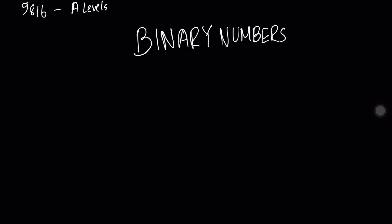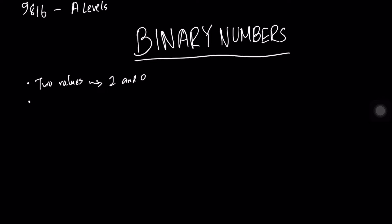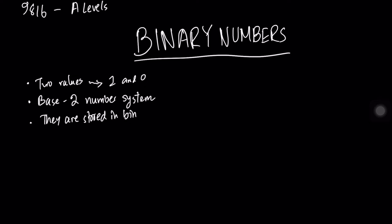So what is the binary number system and how does it work? Binary number systems work using two values. They represent data with two values — and most of you already know those values — that's one and zero. It is a base-two number system, and binary numbers are stored in binary registers.